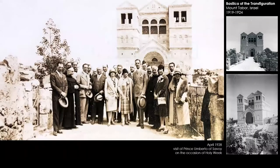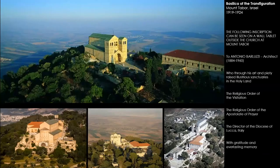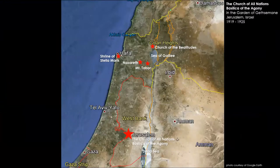A view from April 1928 with a visit from Prince Umberto of Savoy on the occasion of Holy Week. A couple of photographs relay this incredible majestic setting, 2,000 feet above the plains below. The construction of the Church of All Nations was actually going on simultaneously, so Barluzzi had two projects going on side by side, about 65 or 70 miles apart.